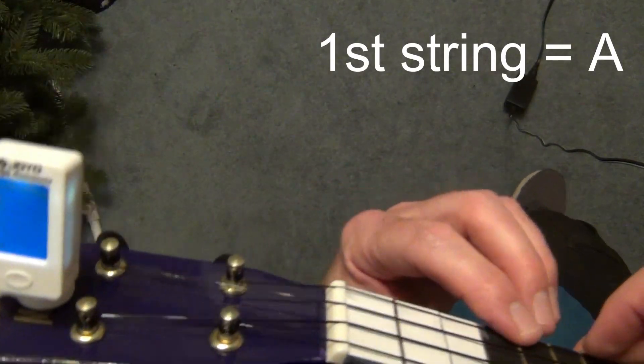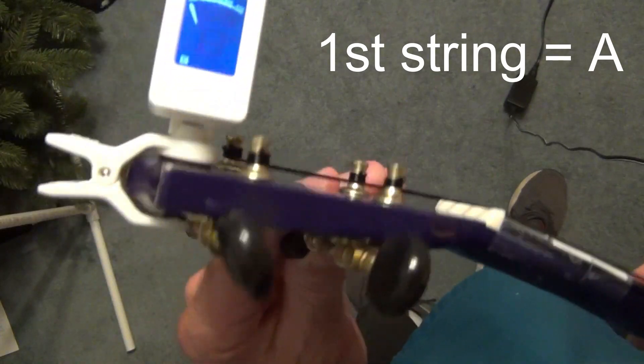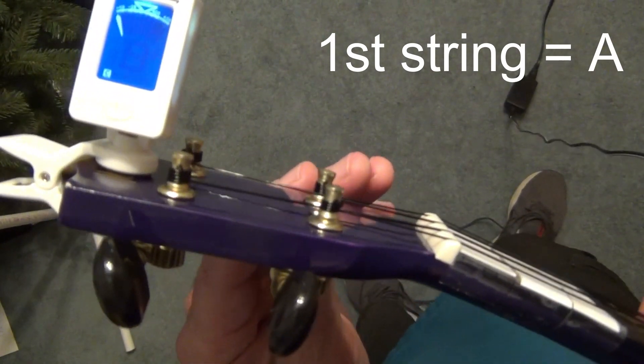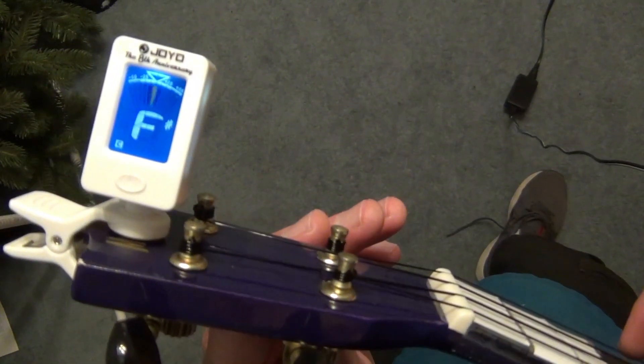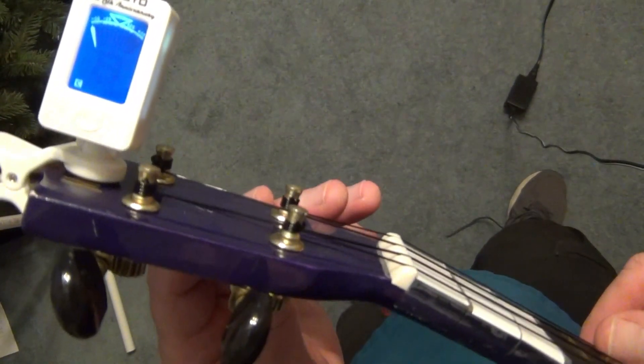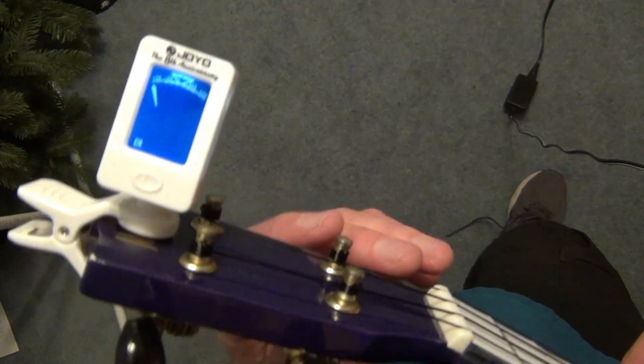Okay now I'm going to the first string which is closest to the floor. That's an A note. Again think righty tighty lefty loosey. I hit the string. That's an F sharp. So that's way flat. I have to tighten that by going righty tighty.